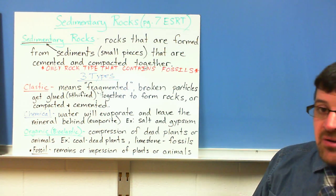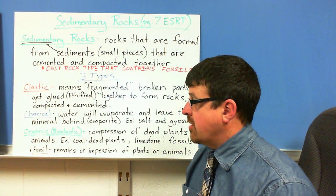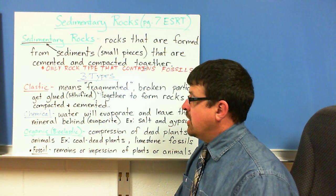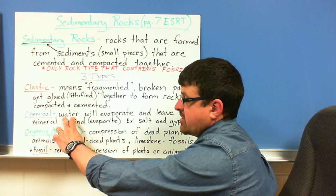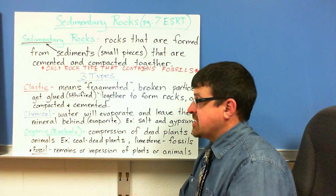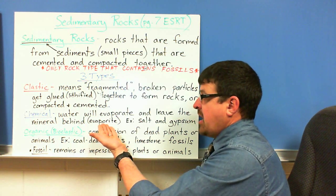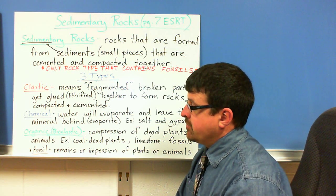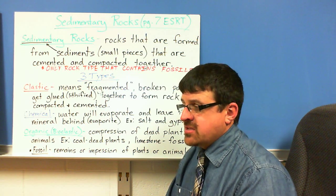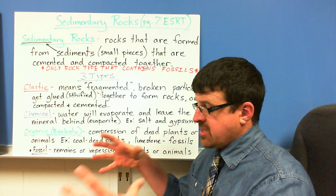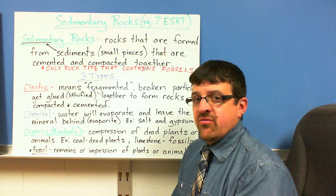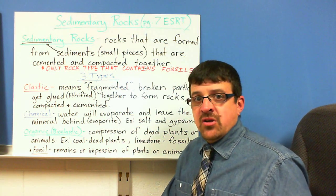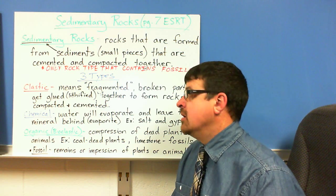Chemical sedimentary rocks include rock salt, rock gypsum, halite, and gypsum. They form because minerals are dissolved in water; the water evaporates, and everything else is left behind — that's called an evaporite. Rock salt and rock gypsum are two examples. If you have a wood stove with a pot of water that evaporates, the minerals left behind in the container are exactly this kind of process.